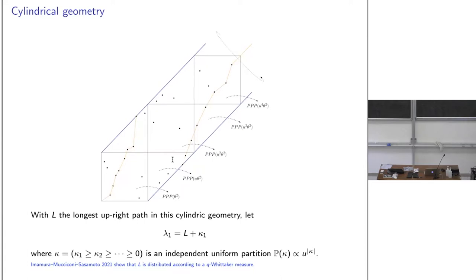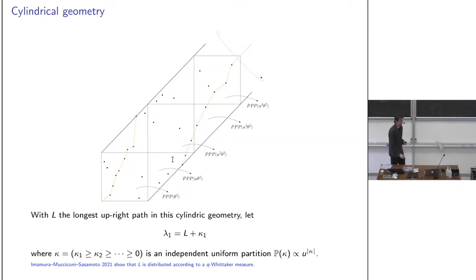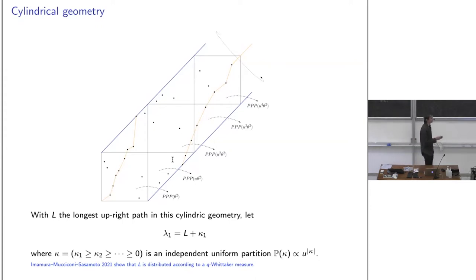For simplicity we take the convolution of L with κ₁, where κ₁ has distribution P(κ₁ ≤ m) = u^{m+1}(u;u)_∞ — essentially a Pochhammer symbol product. κ₁ is the first part of a random uniform partition and has a discrete Gumbel law.